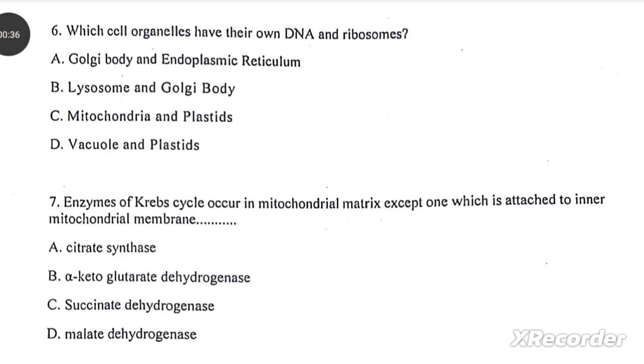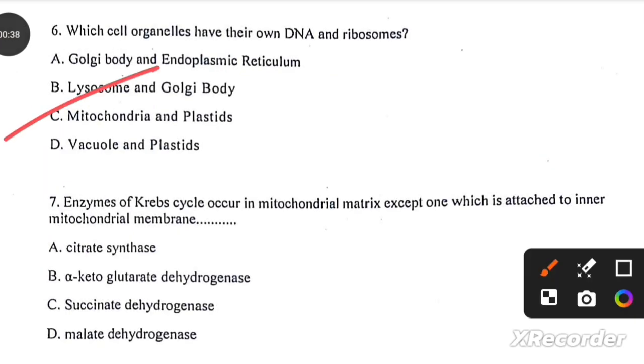Which cell organs have their own DNA and ribosomes? Mitochondria and plastids. Enzymes of Krebs cycle occur in mitochondrial matrix except one which is attached to the inner mitochondrial membrane, SDH.